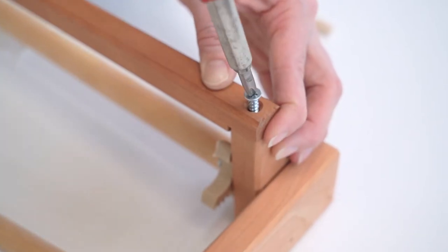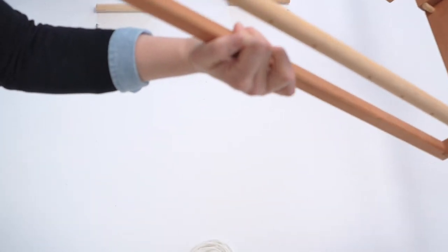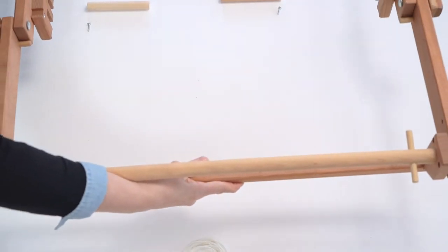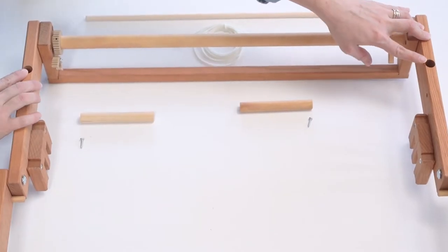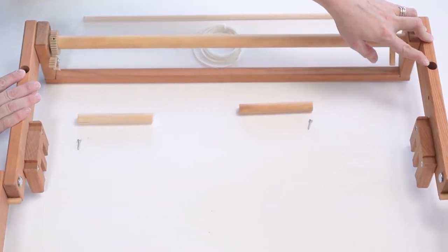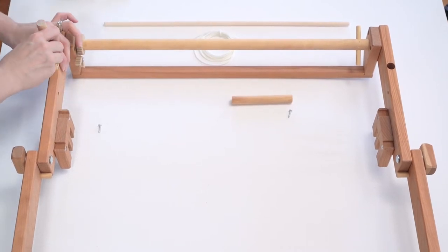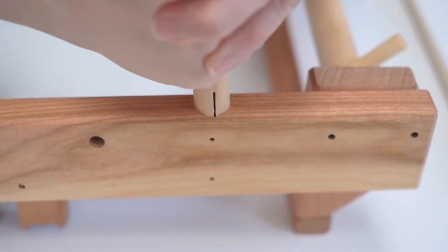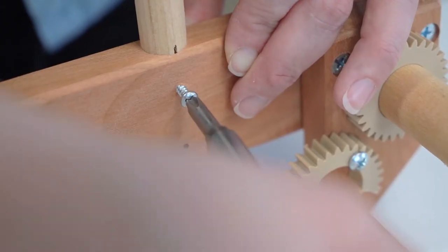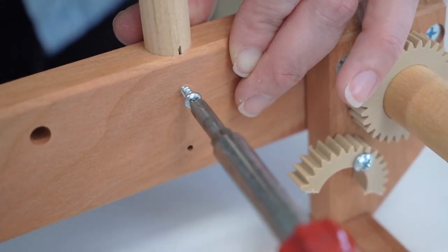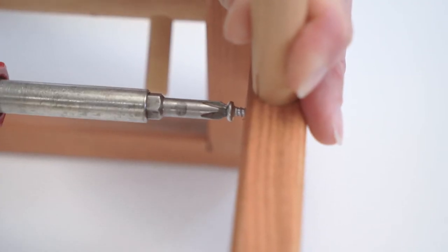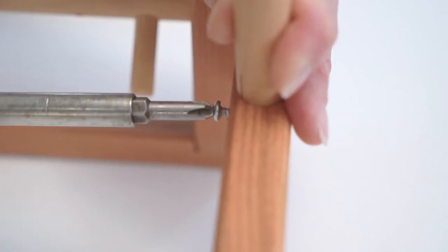Do the same thing on the back then flip it over to expose the large dowel holes on the bottom side of the loom. So on both sides you'll fit the dowels in and they fit nice and snug but then you'll want to screw this into the dowel and this just ensures that they won't come out.